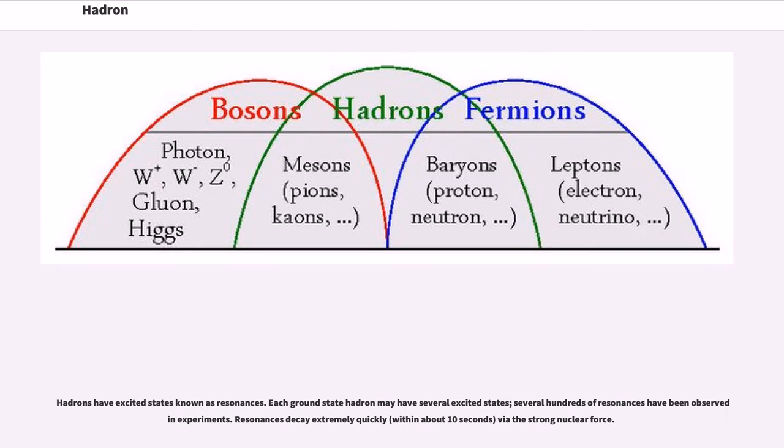Hadrons have excited states known as resonances. Each ground state hadron may have several excited states; hundreds of resonances have been observed in experiments. Resonances decay extremely quickly (within about 10^−23 seconds) via the strong nuclear force.